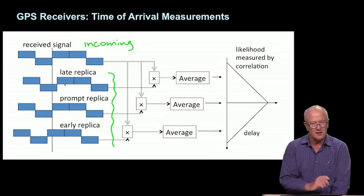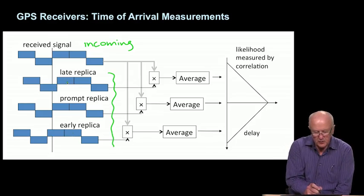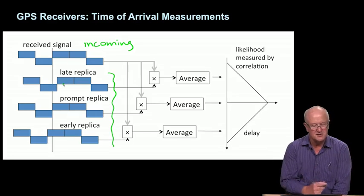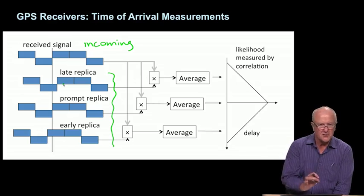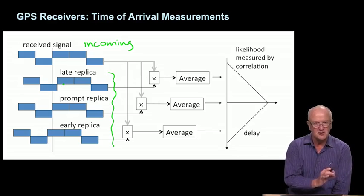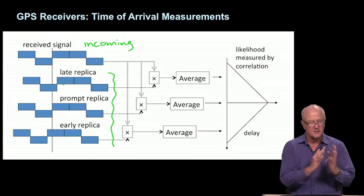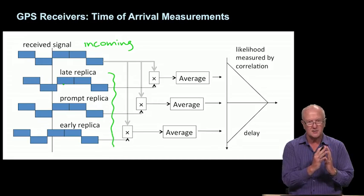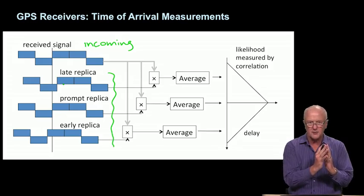This contrasts our earlier view where we were trying to find the signals roughly. Now we've got a pretty good notion, and rather than trying to acquire the signal, we're trying to track it, following it around as that pseudorange varies.